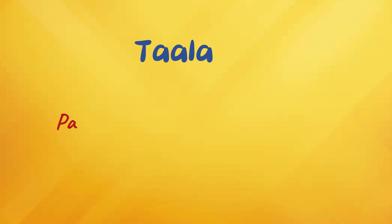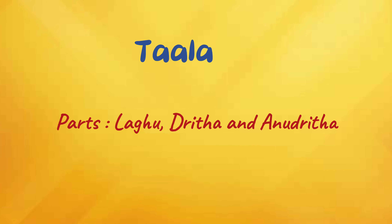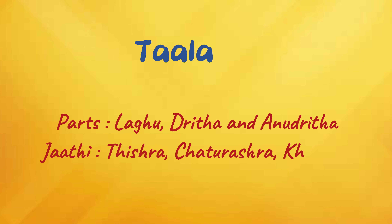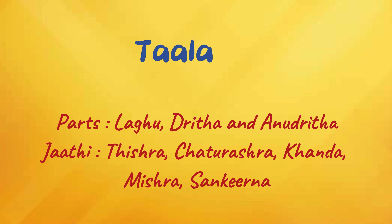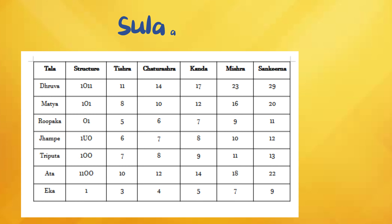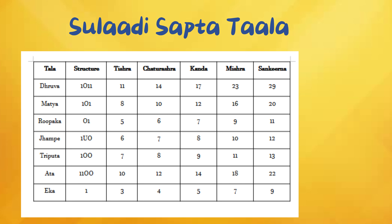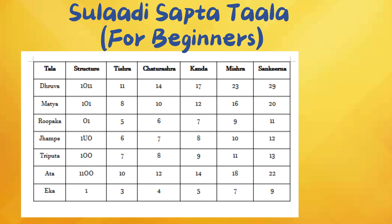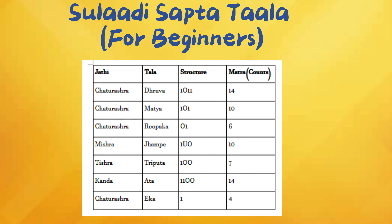We already know that the parts of Tala are Laghu, Drita and Anudrita. There are five Jatis: Tishra, Chaturashra, Khanda, Mishra and Sankirna. This table is the reference of Sapta Talaas. The Laghus in these Sapta Talaas can be put in any of the five Jatis, thus making a total of 35 Talaas. But for beginners, let's stick to the table below.